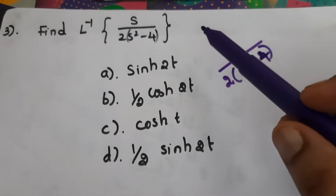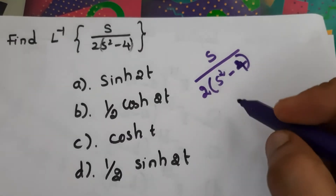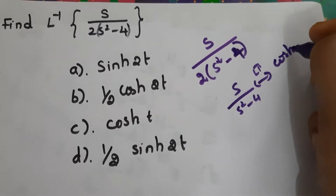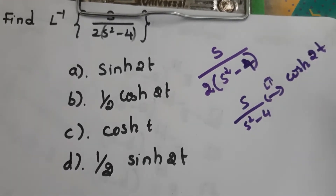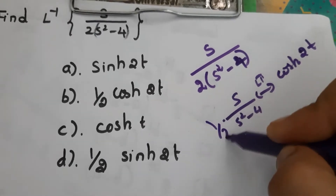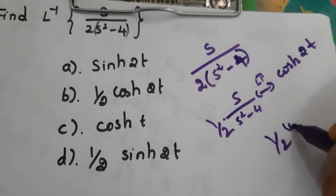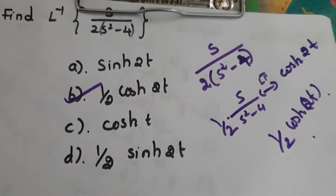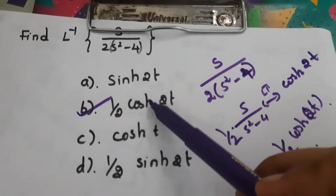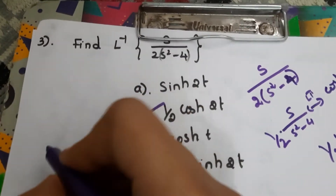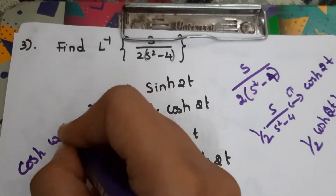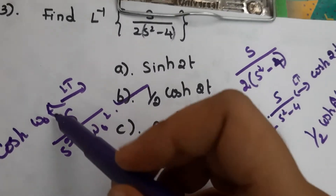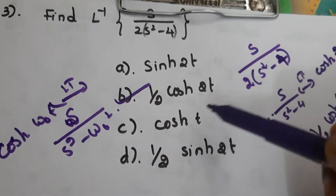Third question: find the inverse Laplace transform of s divided by [2·(s² - 4)]. We know the Laplace transform pair: s/(s² - ω₀²) corresponds to cosh(ω₀t). Here we have a factor of 1/2 in front, so the answer is (1/2)·cosh(2t). The answer is B. Memorize that the Laplace transform of cosh(ω₀t) is s/(s² - ω₀²).